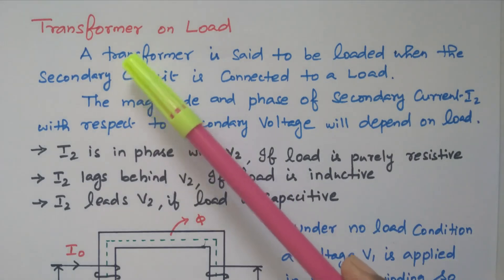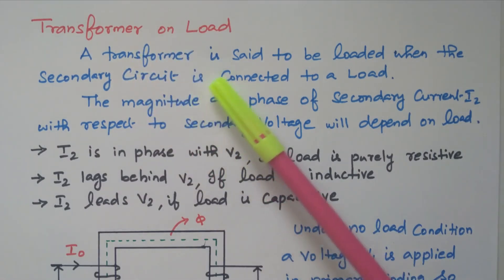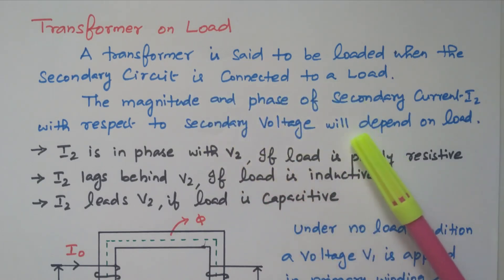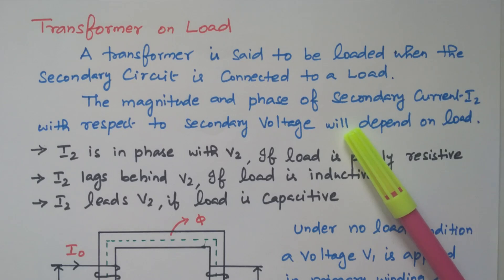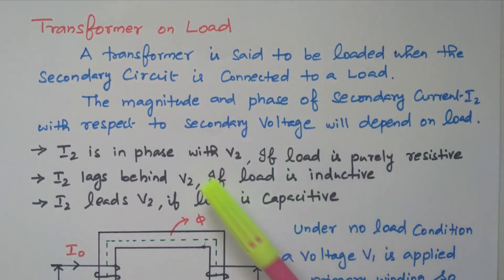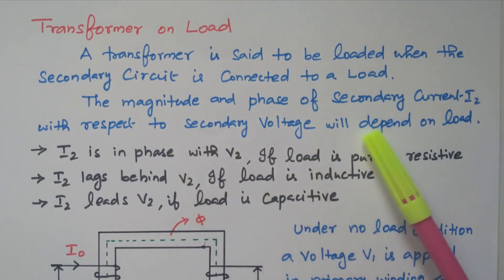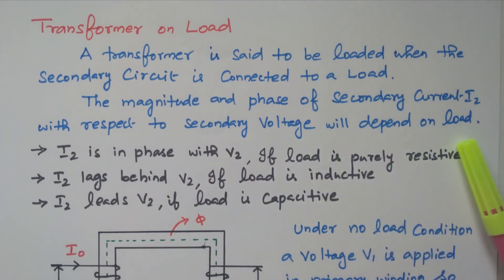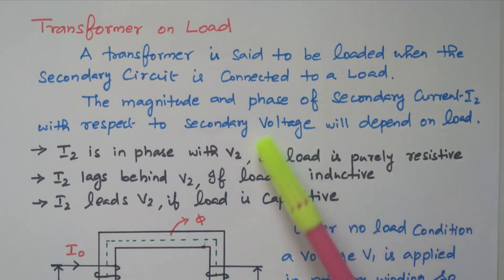Now we will go to the topic: transformer on load. A transformer is said to be loaded when the secondary circuit is connected to the load. We know that a transformer has a primary winding and secondary winding. If the secondary winding is connected with the load, then the transformer is said to be loaded. The magnitude and phase of secondary current I2 with respect to the secondary voltage depends upon the load — whether it is in phase or out of phase depends upon the load. That is the relation between the secondary current and secondary voltage.